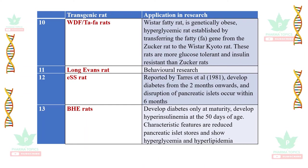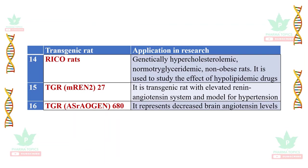The ESS rat develops diabetes from two months onwards, with disruption of pancreatic islets occurring within six months. The BHE rat develops diabetes only at maturity, approximately after 50 days of age; characteristic features include reduced pancreatic islets, and it shows hyperglycemia and hyperlipidemia. The RICO rats are genetically hypercholesterolemic, normal triglyceridemic, non-obese rats used to study the effect of hypolipidemic drugs.